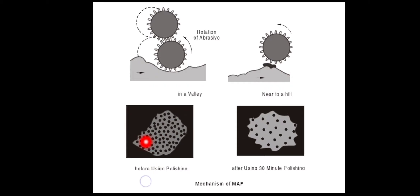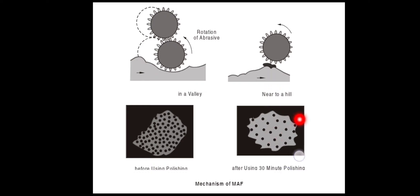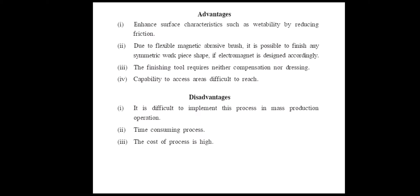It gives a nice surface finish, and the defect cell is very narrow. Before polishing or after polishing, the roughness is reduced. We have to address the thermal and damped defect cells, the hill and valley cells, to level them. This is a very advanced technology. It enhances surface characteristics such as wettability by reducing friction. We can also improve surface characteristics further.